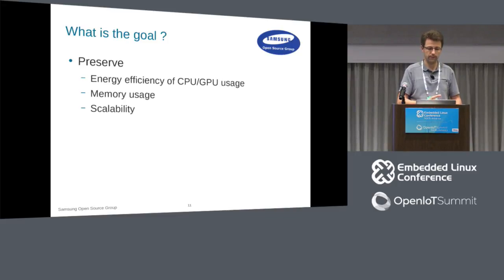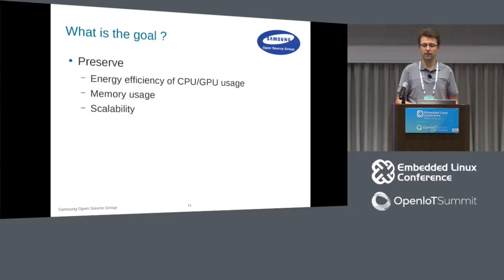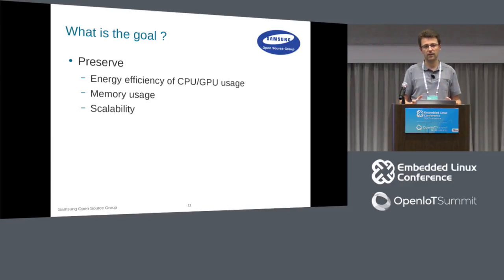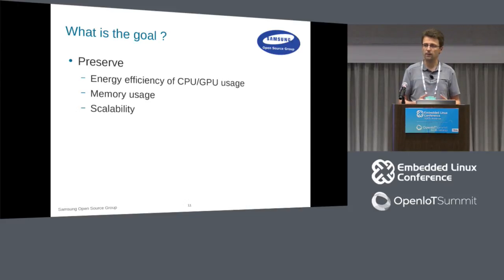We also want to preserve all the benefits of EFL — and at the binding level too. If we do C++, the indirection should not cost you anything; you should be at the same performance level as in C. We want to preserve energy efficiency, memory usage, and scalability. Basically, everything that makes EFL today, we want to preserve — just change the entry point and make sure you can use all these features without blocking.